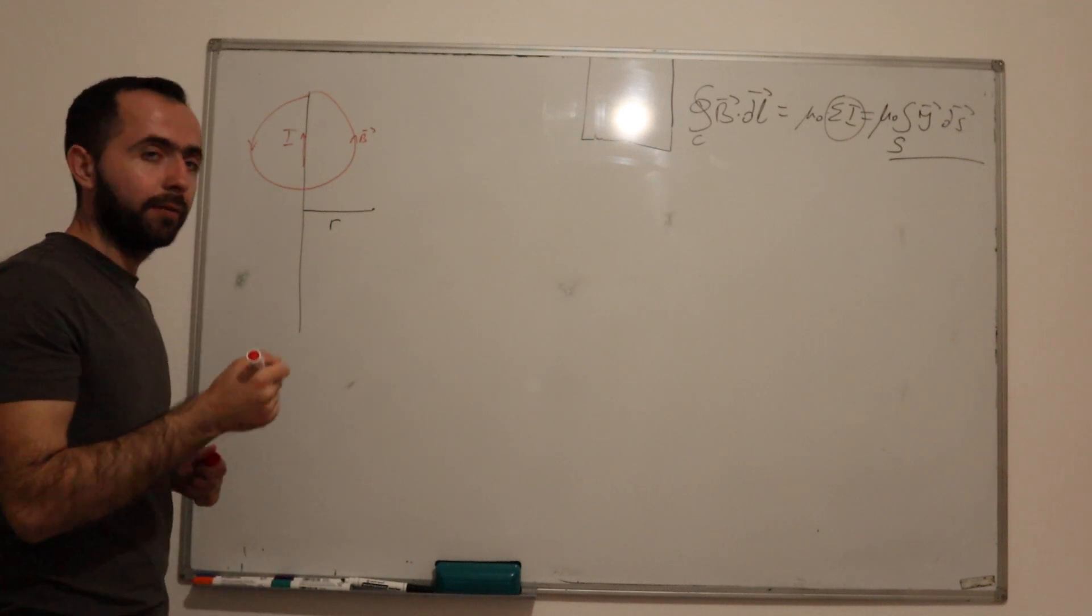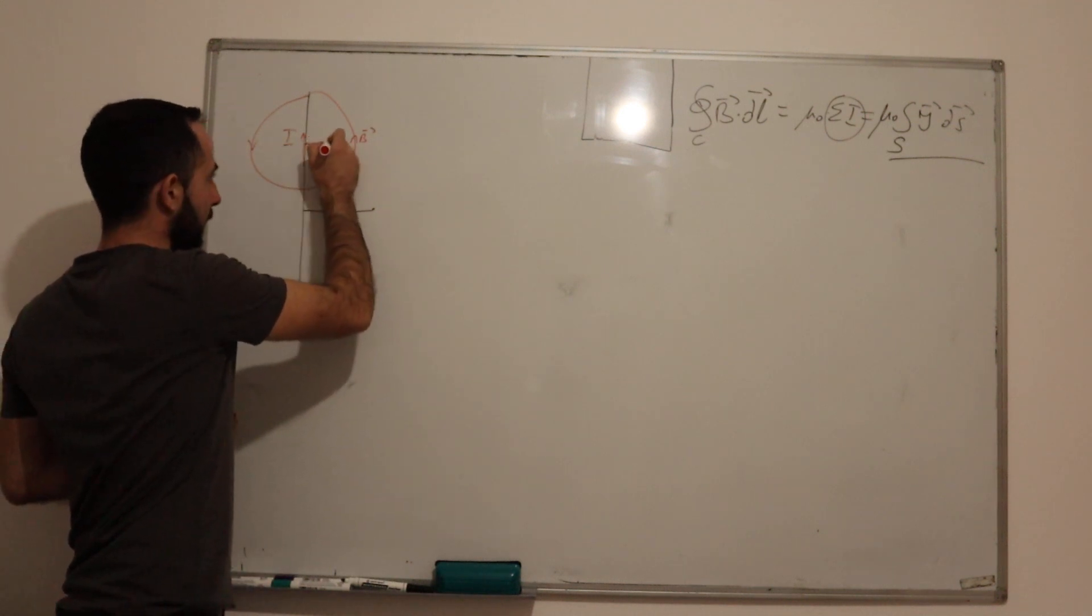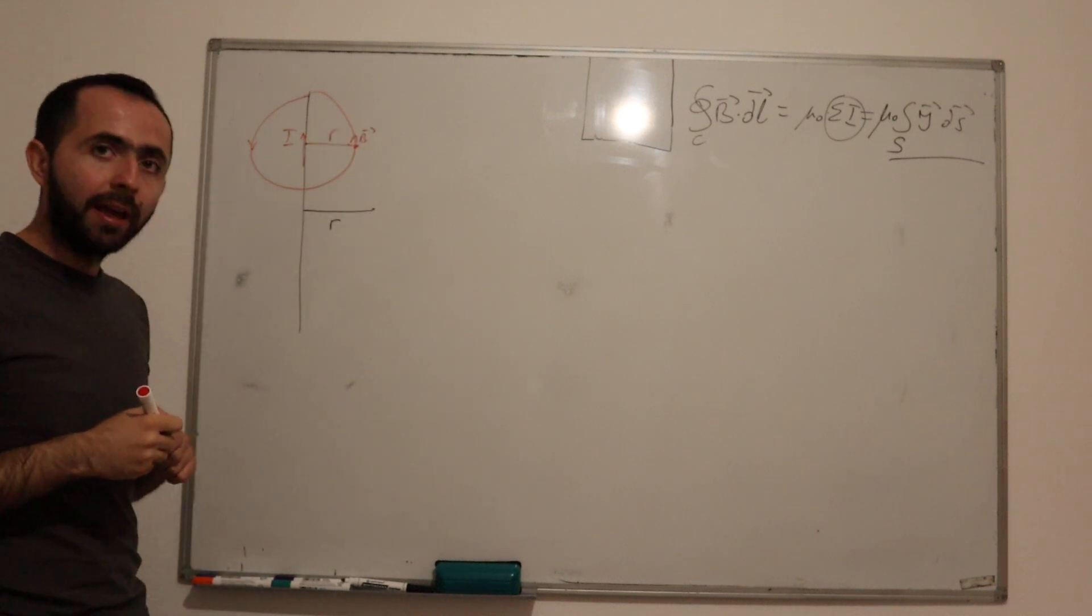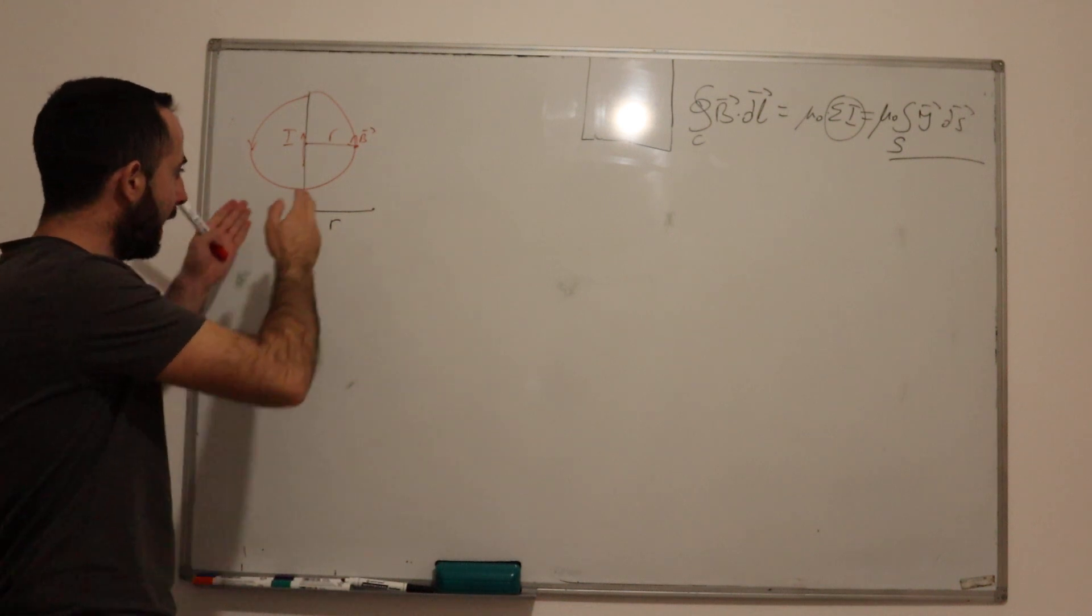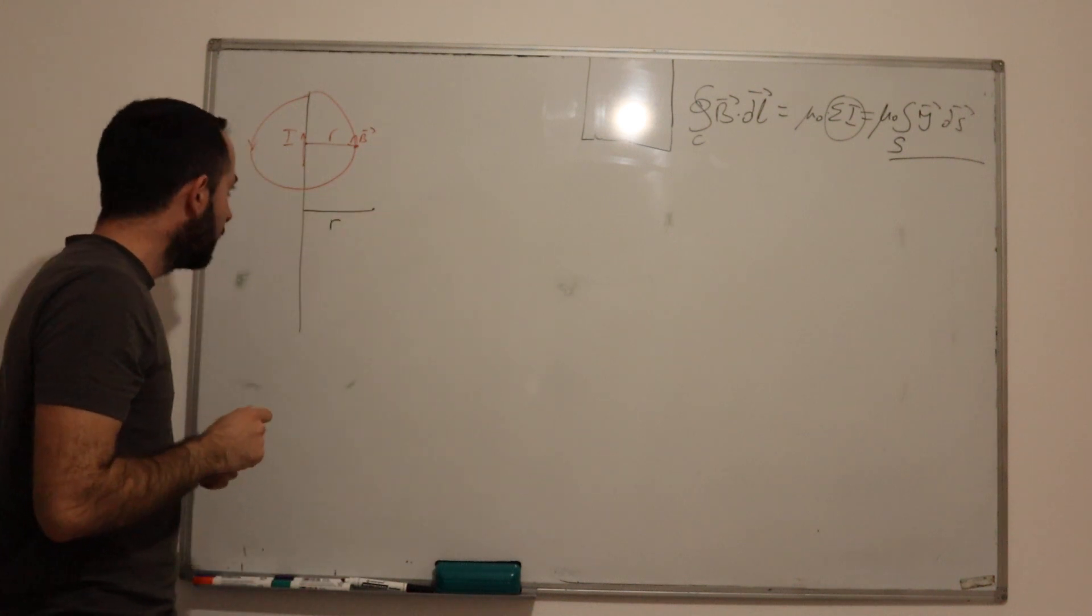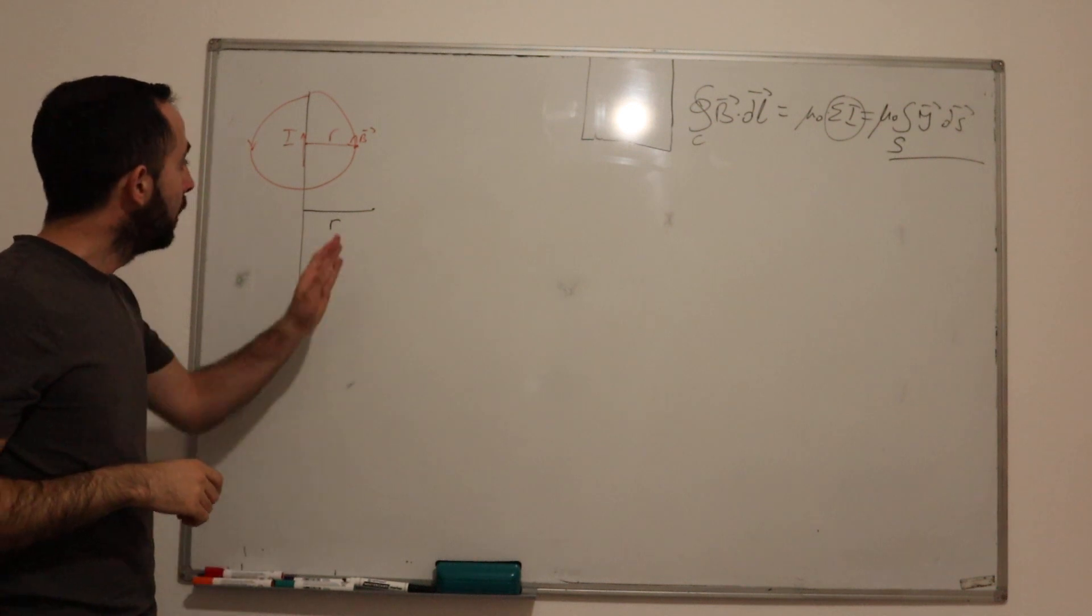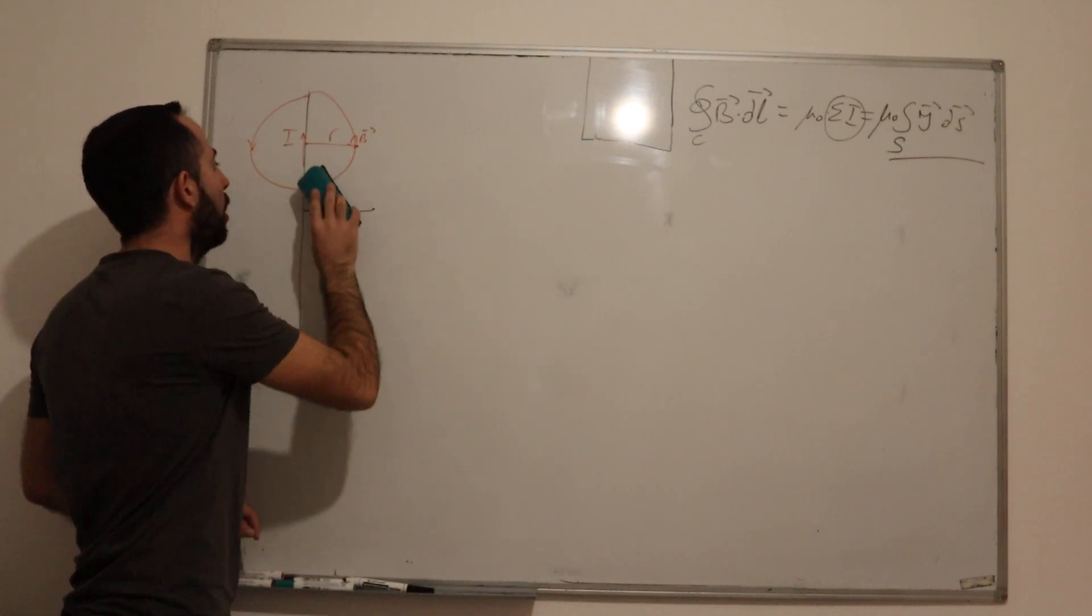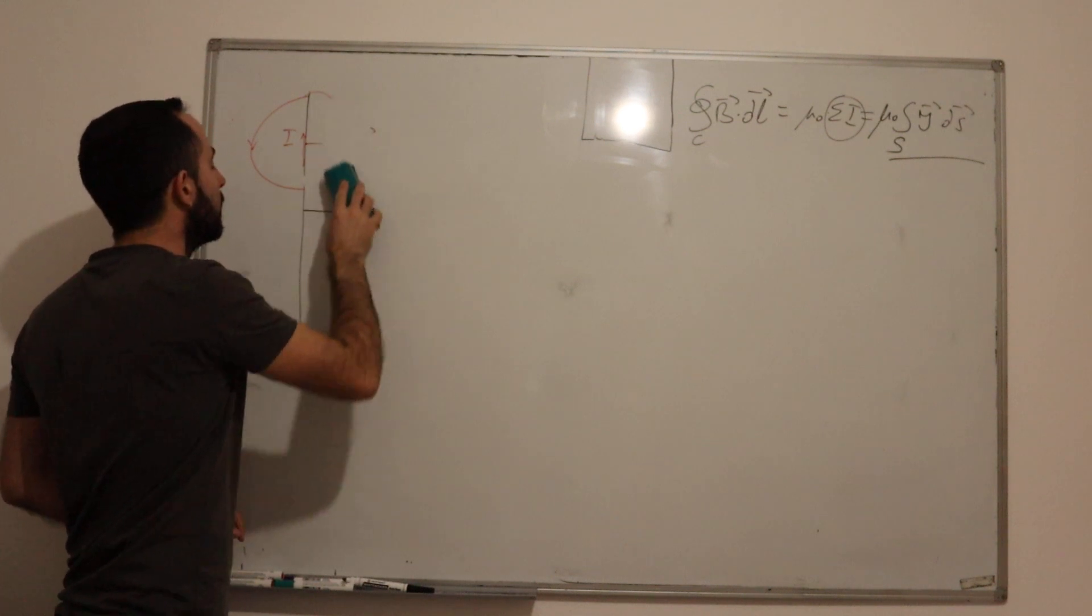This magnetic field has, for example, if we want to calculate it here, we have a radius. The same is asked here to determine magnetic field at radius R.